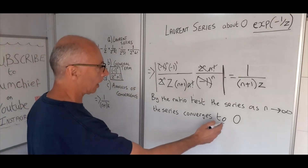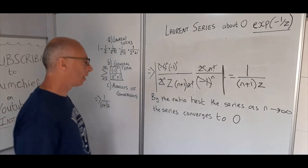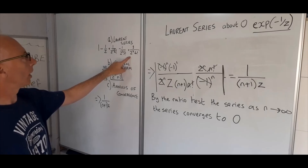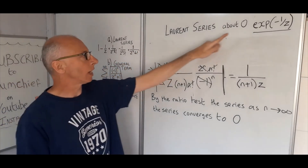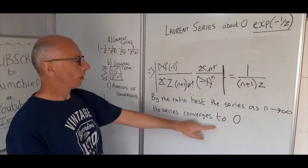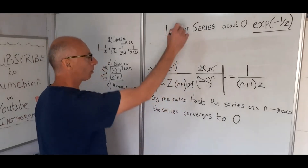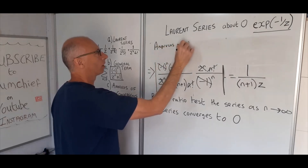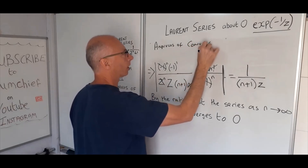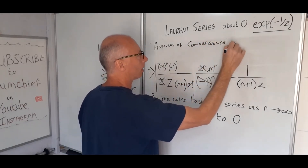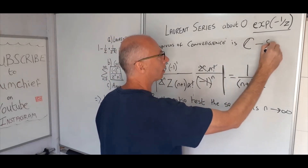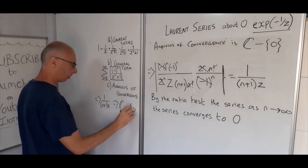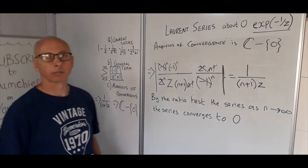As this gets bigger and bigger it converges to zero. The annulus of convergence is therefore the whole complex plane except zero, because for e to the minus one over z, z cannot equal zero. So the annulus of convergence is the complex plane minus zero — and we can put that down as our result.